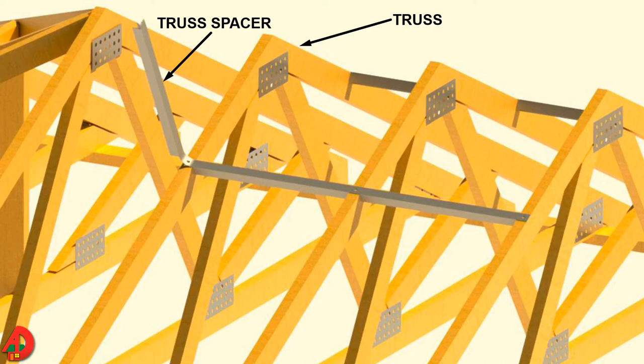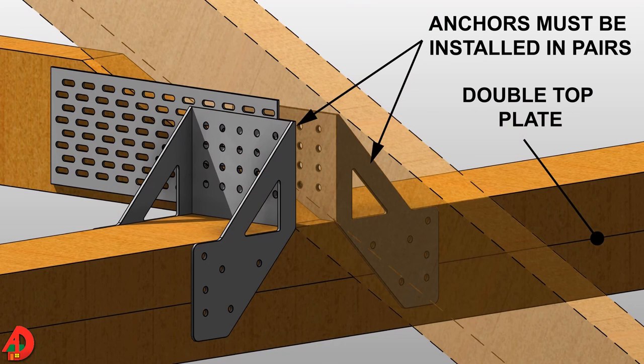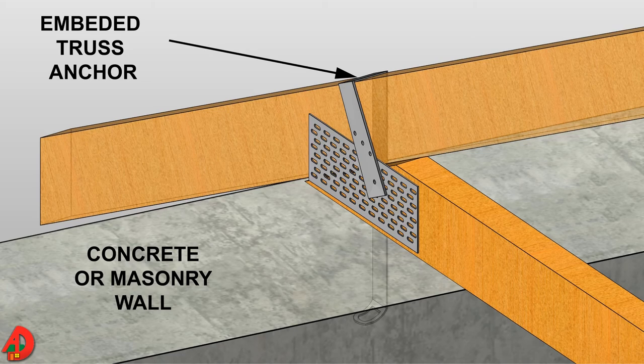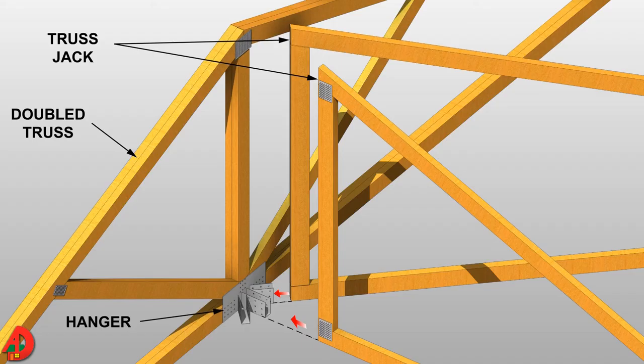Metal anchors, hangers, and angles are used to attach trusses to the tops of framed walls and to one another. Metal anchors are used to attach the heels of a truss to the top plate of a framed wall. Truss hangers are used to attach trusses to other trusses, such as when attaching hip jack rafters to hip rafters.